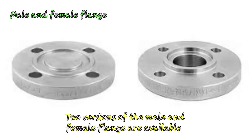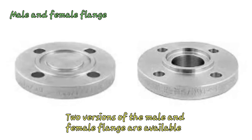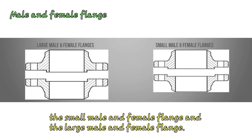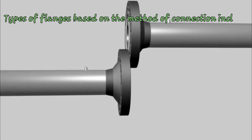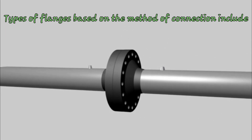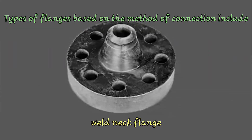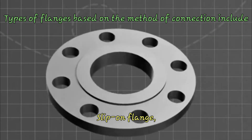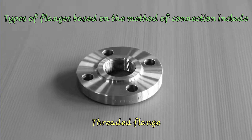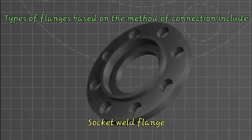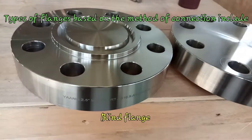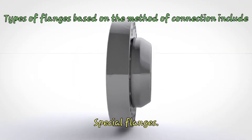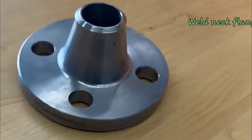Two versions of the male and female flange are available: the small male and female flange and the large male and female flange. Types of flanges based on the method of connection include: weld neck flange, lap joint flange, slip-on flange, threaded flange, socket weld flange, blind flange, and special flanges.